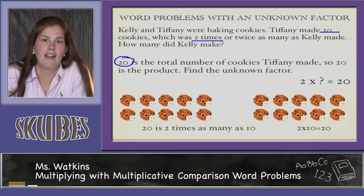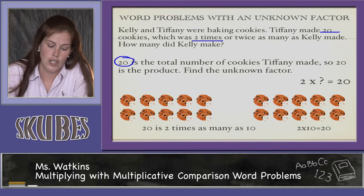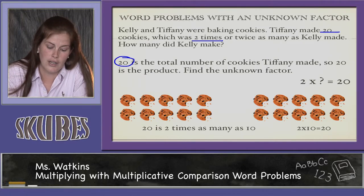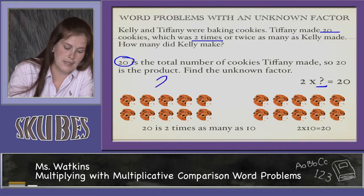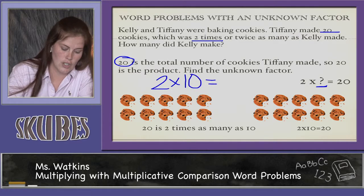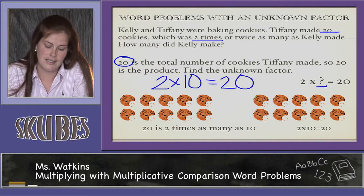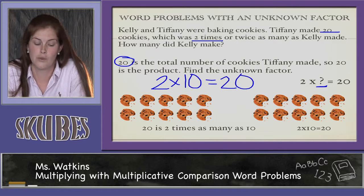We know that 20 is the total number of cookies Tiffany made. So 20 is the product. We have to find the unknown factor. 2 times what number equals 20? So we know that 2 times 10 equals 20. 20 is 2 times as many as 10.